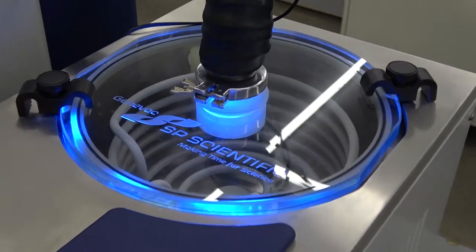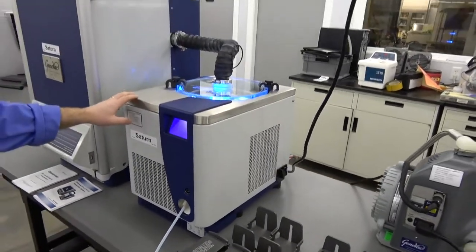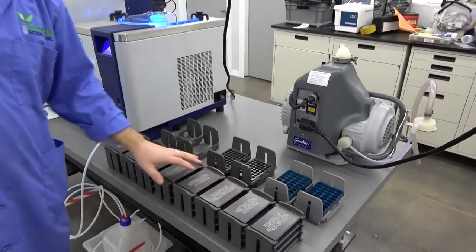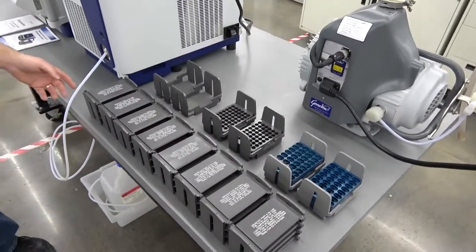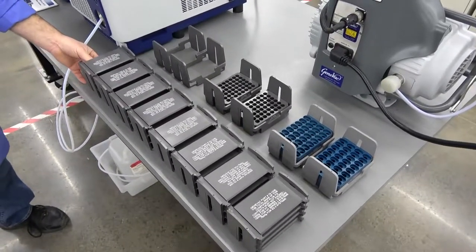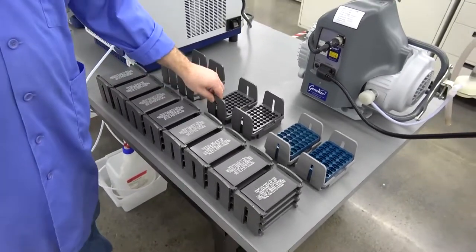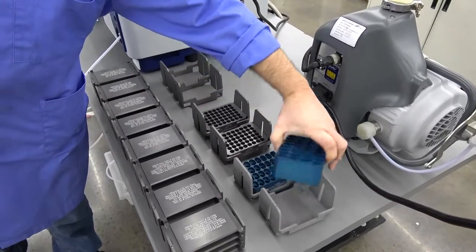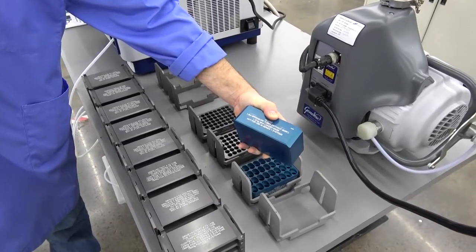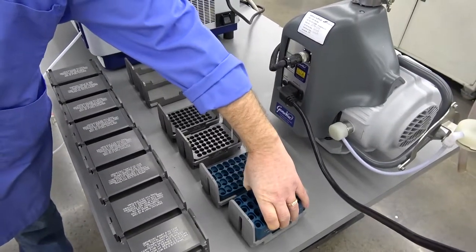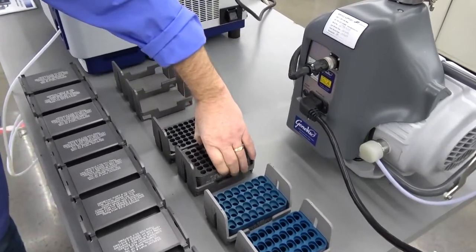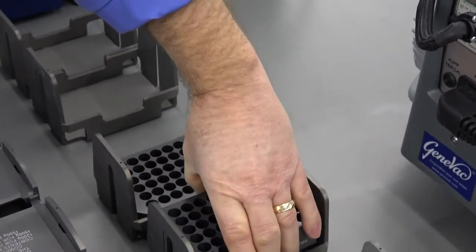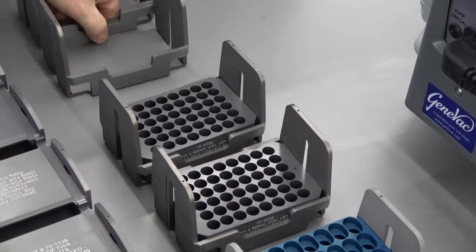And then also what you're getting, you're getting a lot of accessories too with the swing buckets here. You're getting eight microplate holders here and each one holds three microplates. You're getting four swing buckets here and you've got two blocks for vials here. That's the Eppendorf tubes block. You've got two of them.